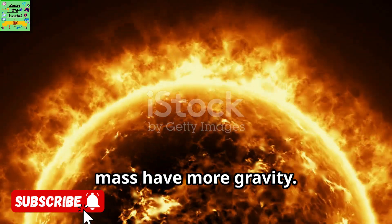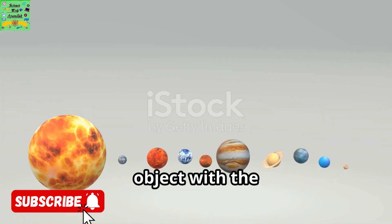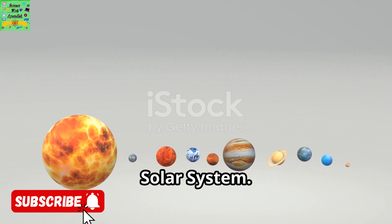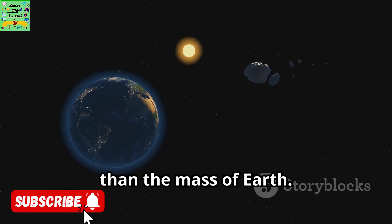You saw that objects with more mass have more gravity. The Sun is the object with the largest mass in the solar system. The mass of the Sun is times greater than the mass of Earth.